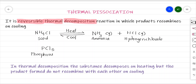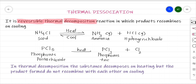Phosphorus pentachloride, when heated, decomposes to give PCl3 and Cl2 — that is phosphorus trichloride and chlorine gas. This phosphorus trichloride and chlorine gas once again recombine with each other to give PCl5. So this is once again a case of a reversible reaction: the reactant undergoes decomposition to give products.